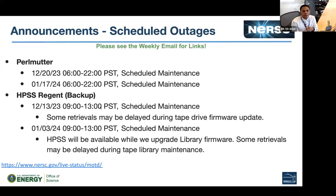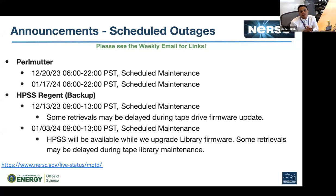We have a couple of scheduled outages over the holiday month. For Perlmutter, there's scheduled maintenance on December 20th and January 17th. HPSS had maintenance yesterday with another scheduled on January 3rd. Please pay attention to those announcements so you're not negatively impacted. You can check the message of the day at NERSC for all system messages and statuses. Any questions or additions to the announcements?